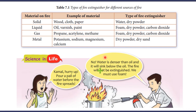Water cannot be used to extinguish fire caused by liquid. This is because water is denser than oil and it will sink below the oil, so the fire will not be extinguished. If the material on fire is a gas — examples like propane, acetylene, and methane — then the types of fire extinguishers that can be used are foam, dry powder, and carbon dioxide.